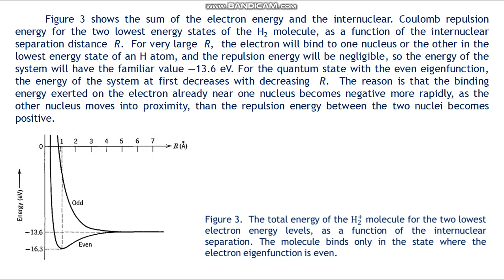The energy as a function of r has a minimum that is about 2.7 electron volts below the energy at large separation. The measured binding energy — the energy required to dissociate H₂⁺ into H and H⁺ — is in good agreement with this value. Because of the significantly weaker binding of the electron in the odd-eigenfunction state, the corresponding total molecule energy curve does not have a minimum at any value of r. Thus the molecule will not bind if the eigenfunction of the electron is odd, since its energy always decreases as the nuclear separation increases.